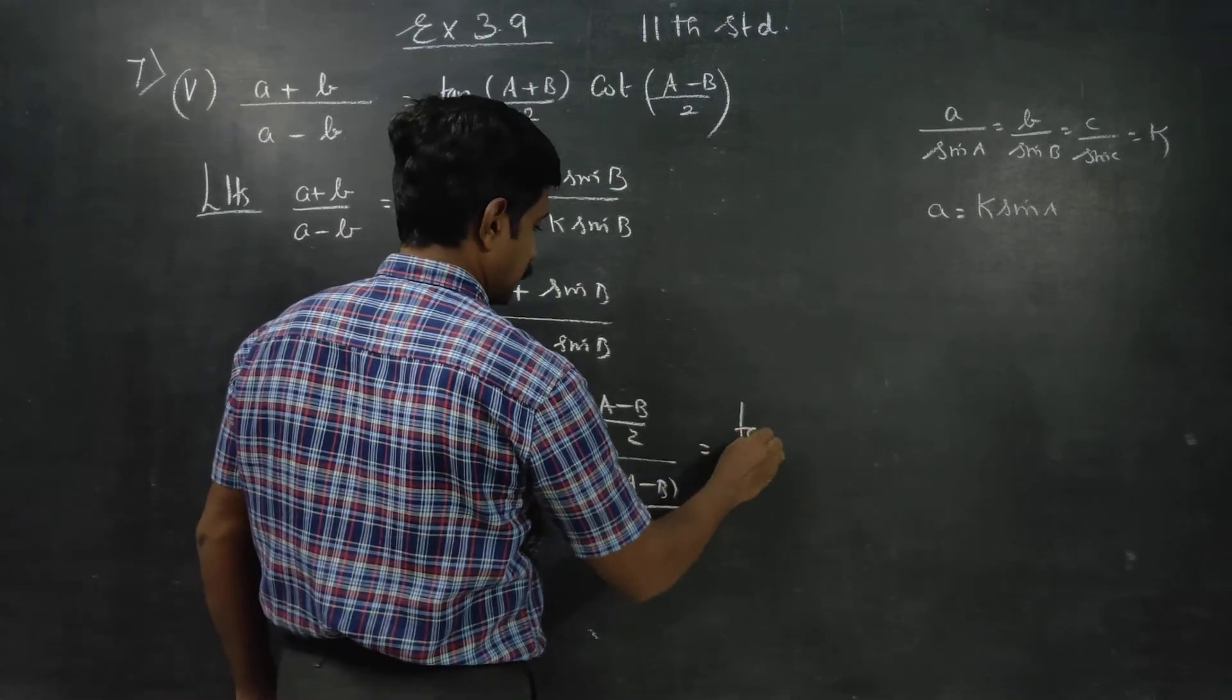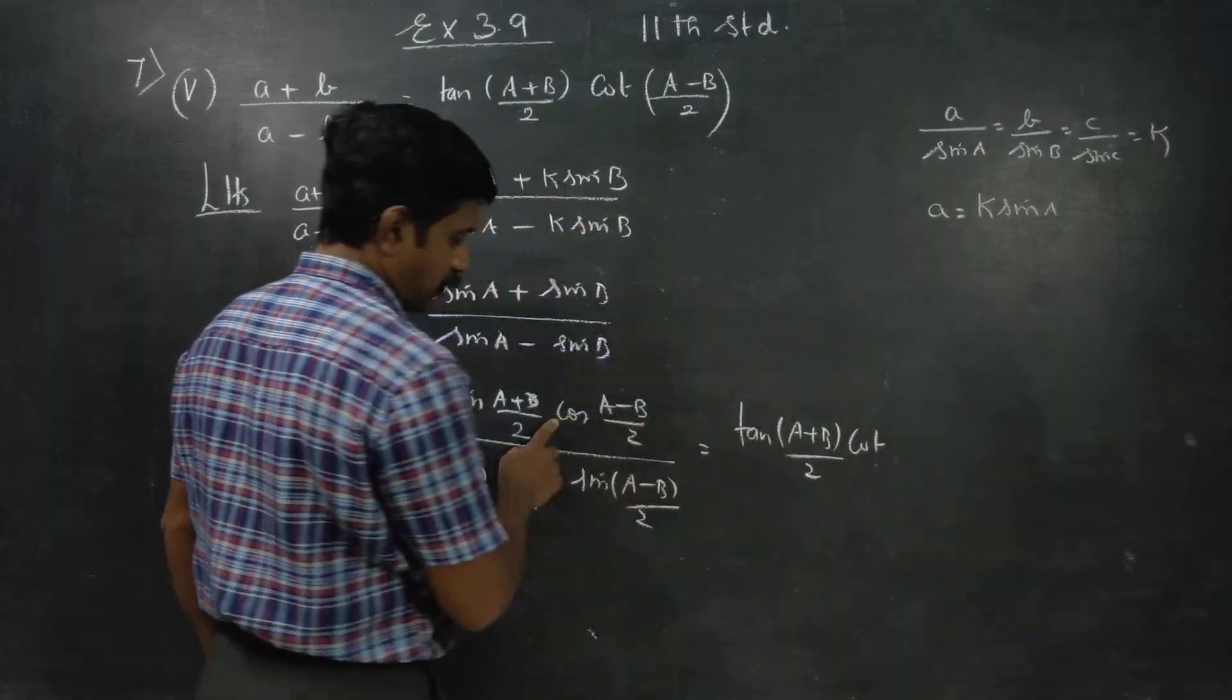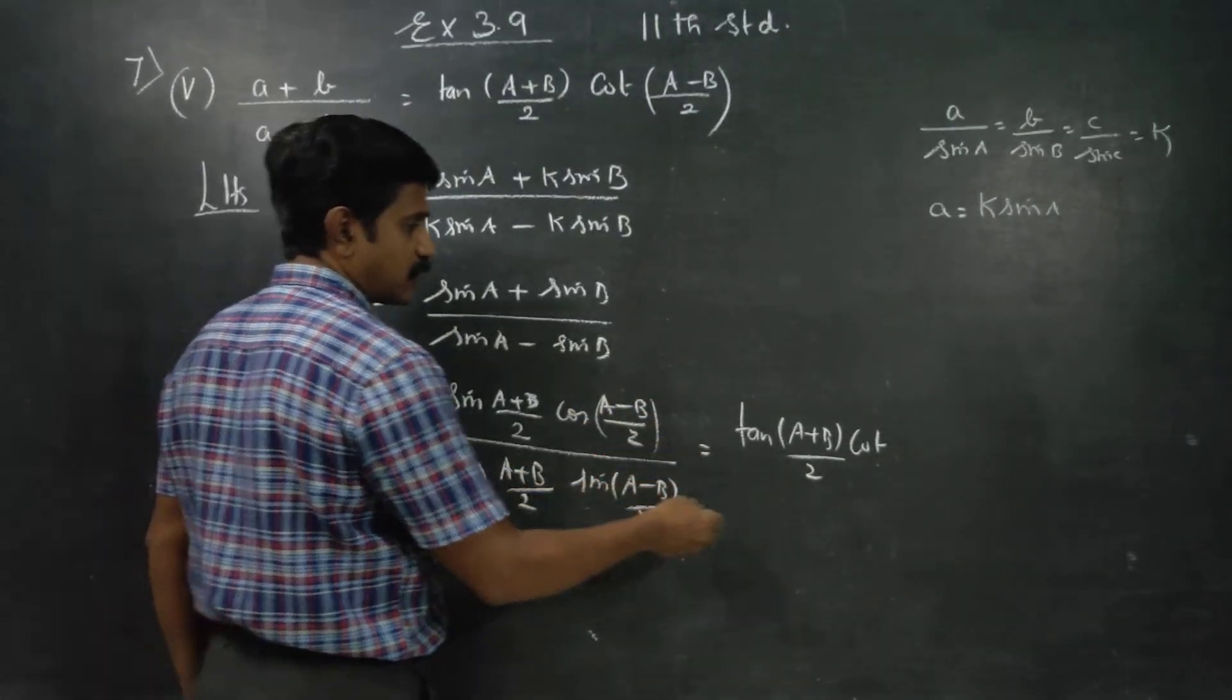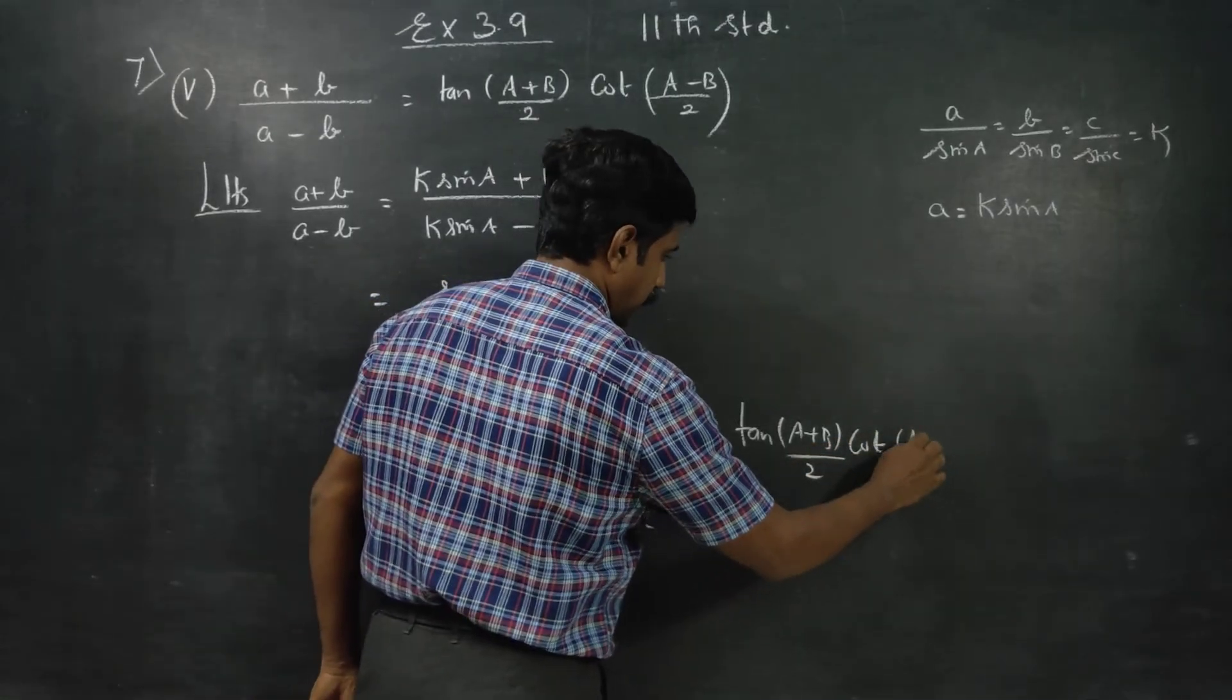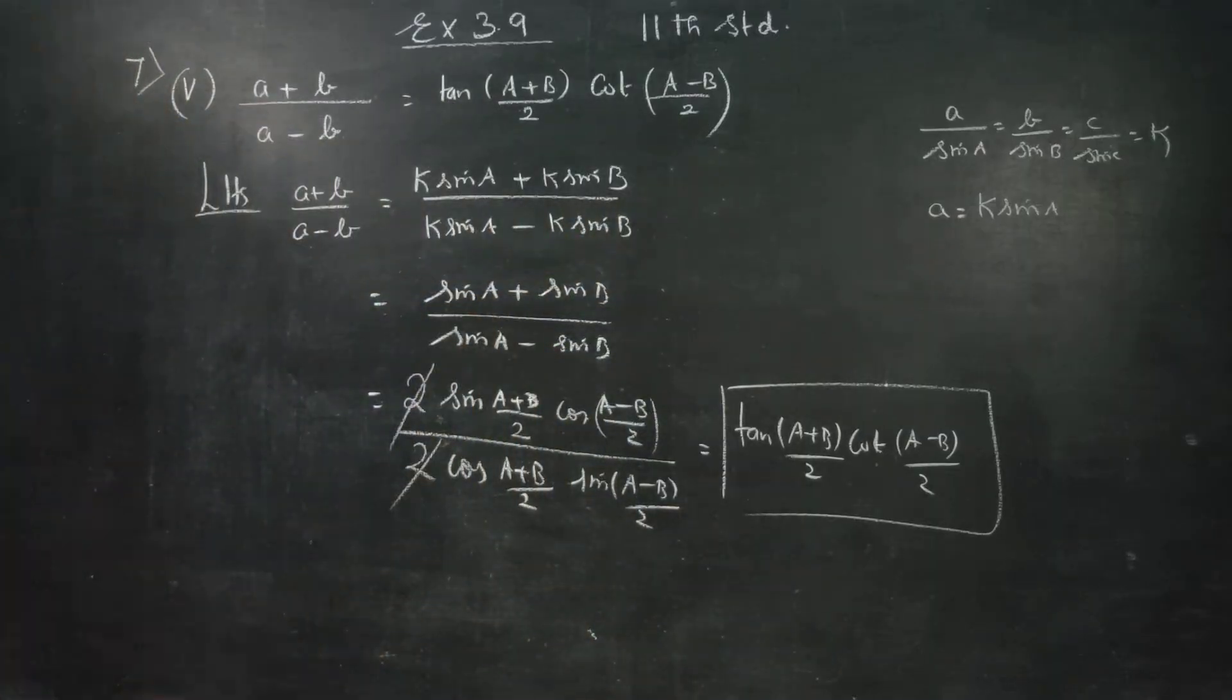Therefore, your answer is tan((A+B)/2) and cot((A-B)/2). This is your final result, equal to the LHS.